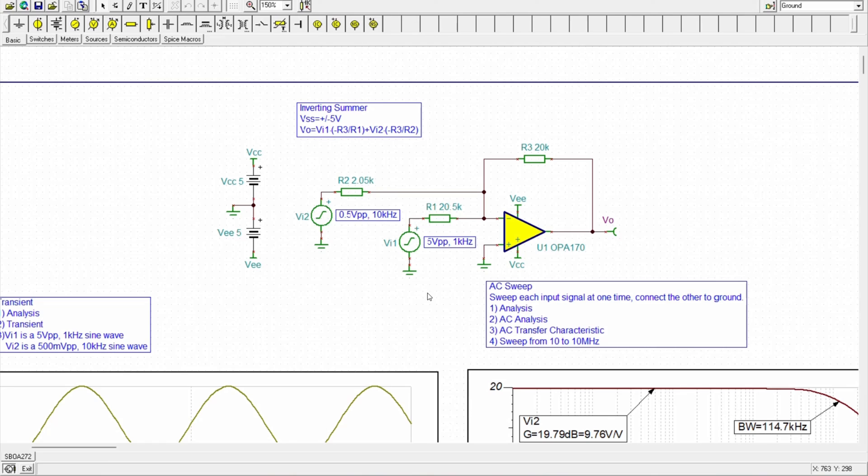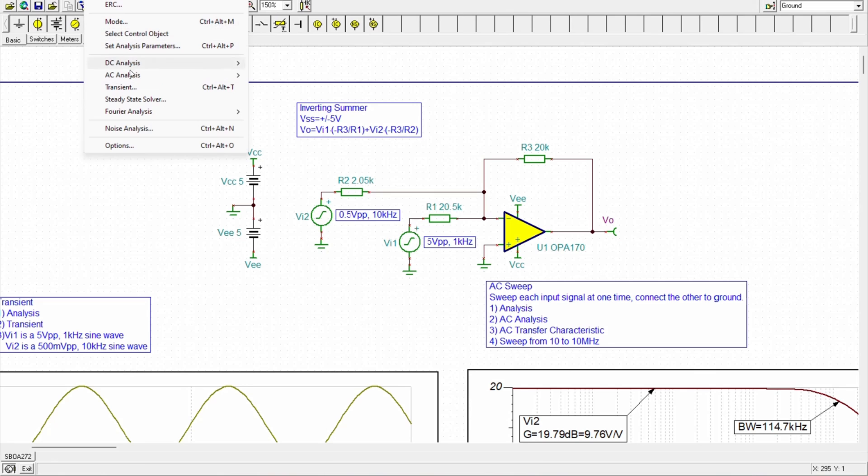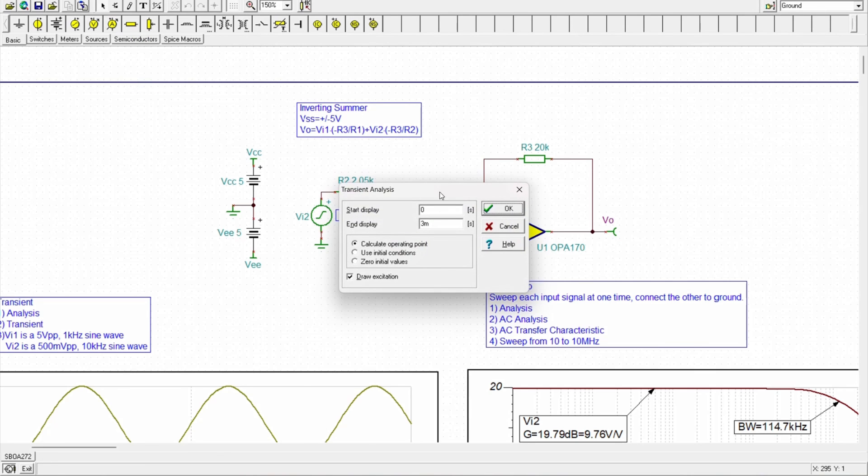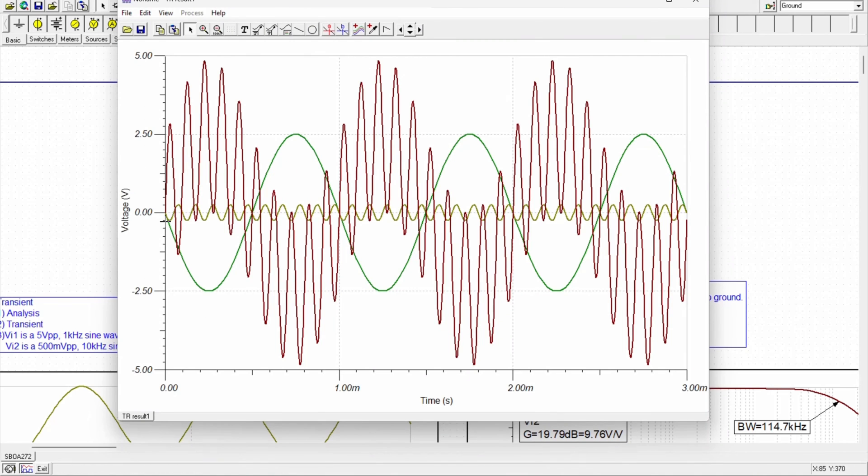We have two different signals at the input, which are 5V peak-to-peak with 1kHz frequency, and 500mV peak-to-peak with 10kHz frequency, and now we will do the simulation. So, you can see this is one input, and this is the another input. And this red signal is the inverting summation of both of these signals. It ranges from minus 4.9V to plus 4.9V with 10kHz.